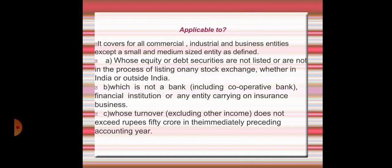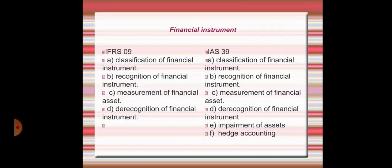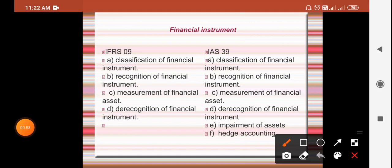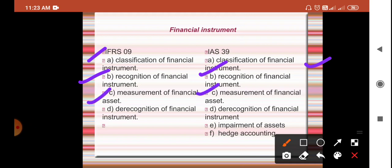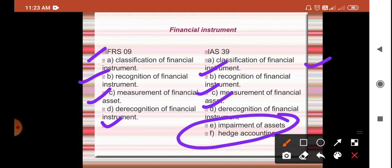IFRS 9 and IAS 39 have the same concepts, but IFRS 9 has been updated with more simplicity, so the difference is not that significant. Both deal with the classification and recognition of financial instruments. However, in IAS 39 there were two additional concepts: impairment of assets and hedge accounting, which we will discuss in further videos.